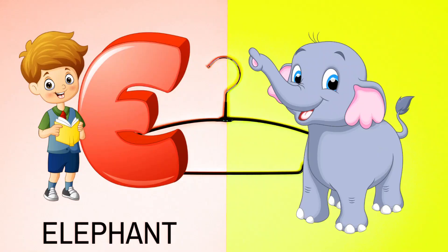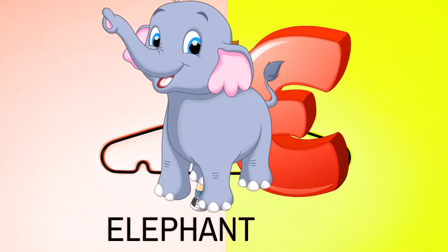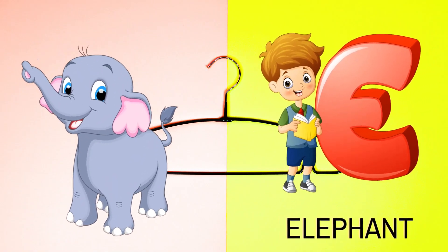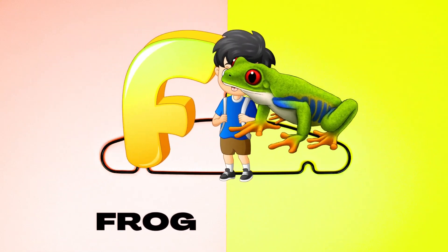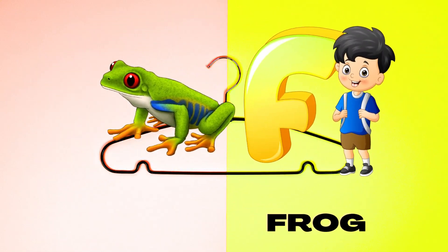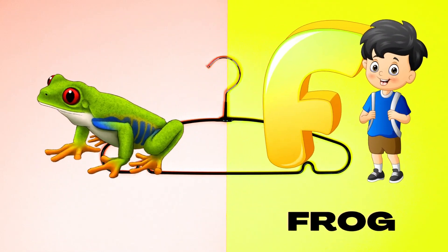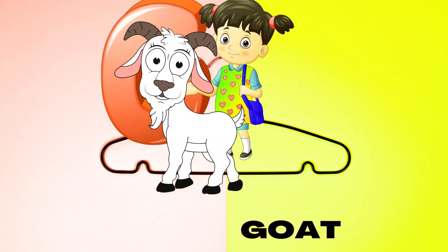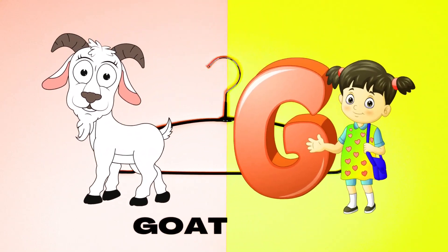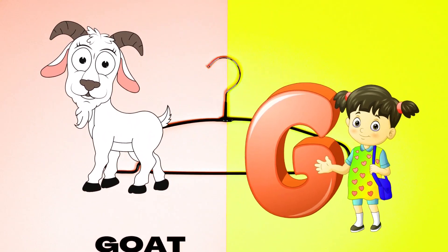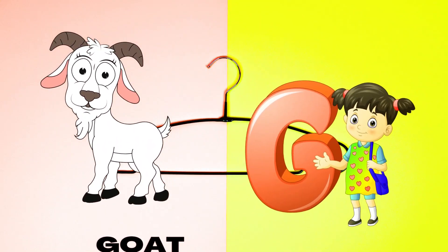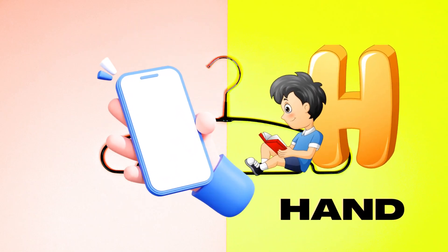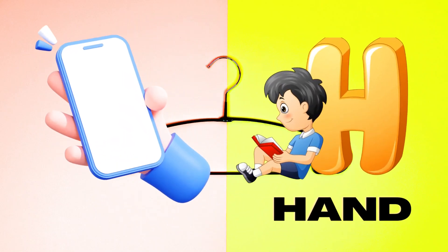E is for Elephant, E-E-Elephant. F is for Frog, F-F-Frog. G is for Goat, G-G-Goat. H is for Hand, H-H-Hand.